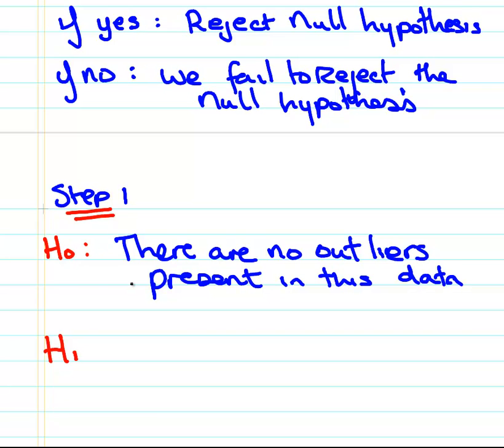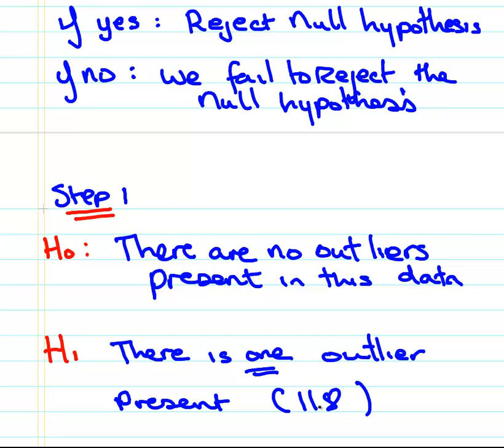The alternative is there is one outlier present, and you could just say it as 118 or the minimum. So that's the first step, state the null and alternative hypothesis. H0 is the null hypothesis, and H1 is the alternative hypothesis. The null hypothesis usually expresses some sort of negative or absence or negative quality. It takes a lot of practice to get the hang of writing out the null hypothesis.